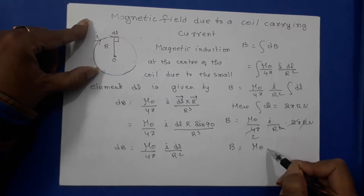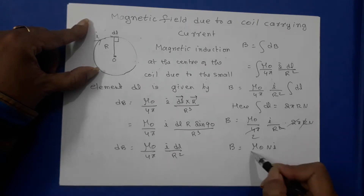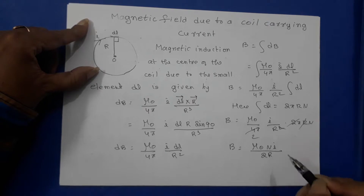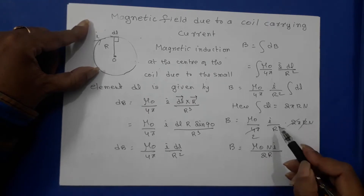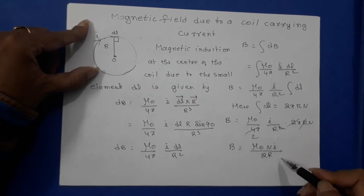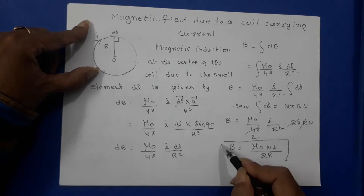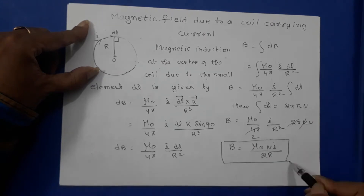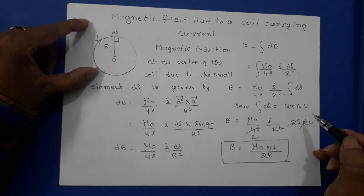So B = μ₀/4π · I/R² × 2πRN. The 2π cancels and one R cancels, giving B = μ₀NI / 2R. This is the magnetic induction at the center of the current-carrying coil. Now I will find its direction.